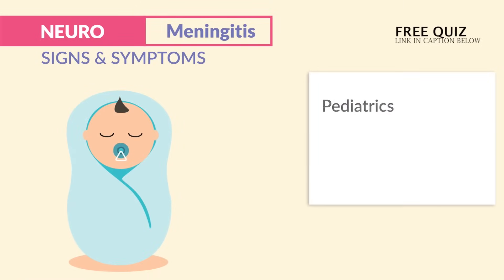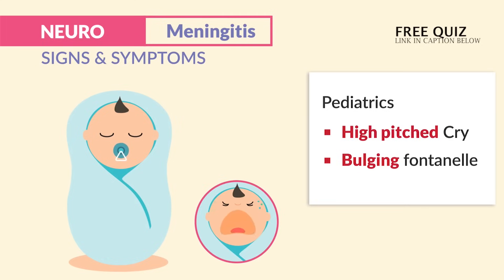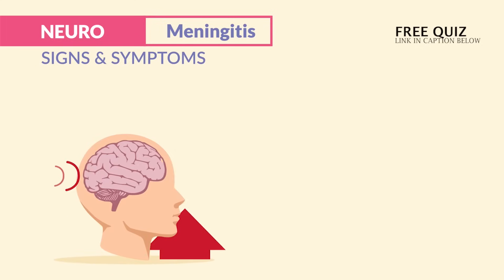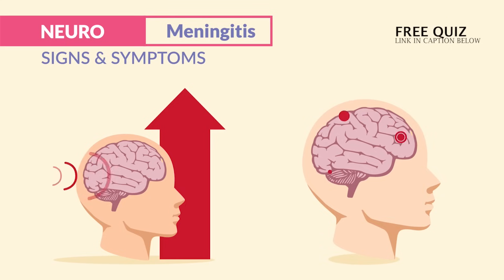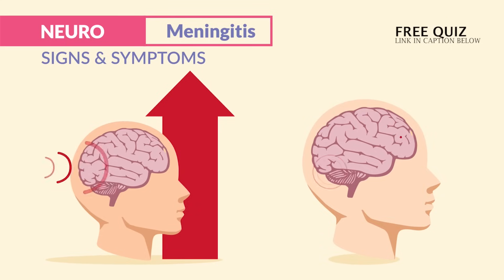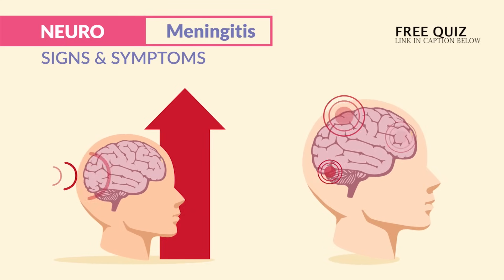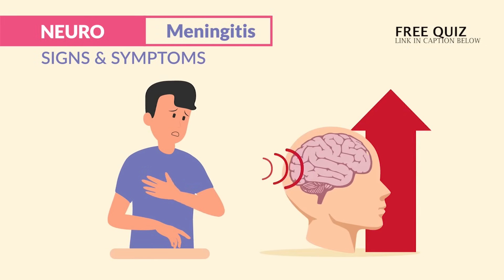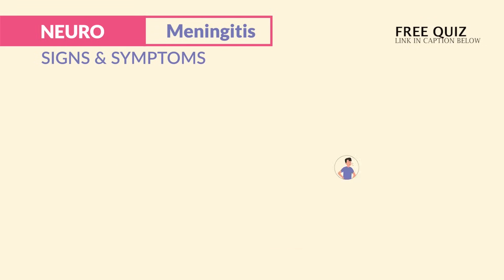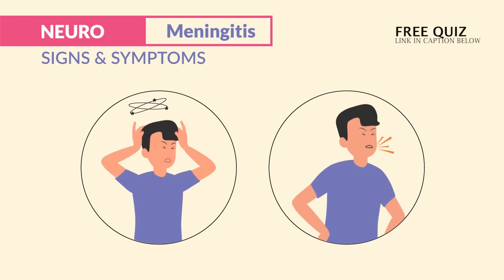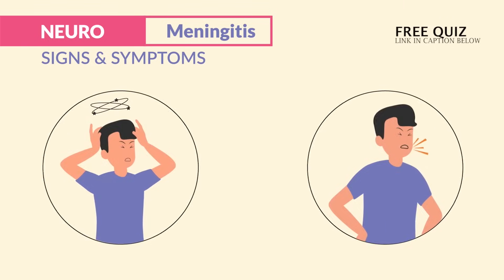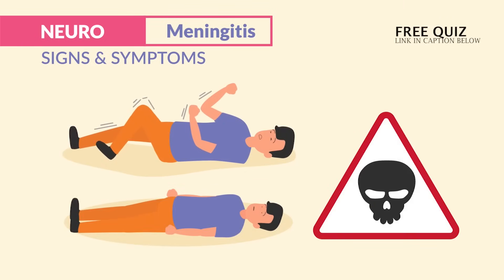For pediatrics, the two classic signs are a high-pitched cry and bulging fontanelles. These are typically the two most tested classic signs for ICP and meningitis in pediatric patients. In adult populations, increased ICP is typically seen as agitation and altered level of consciousness — that mental status change — which is typically the most tested first sign.